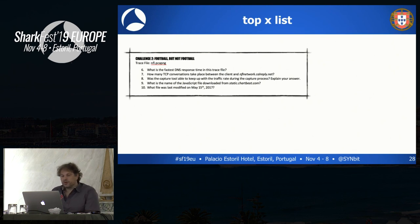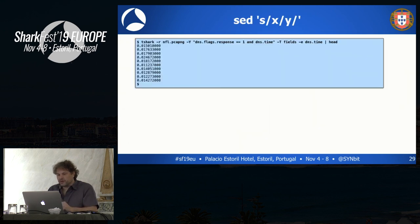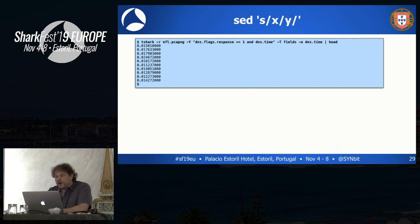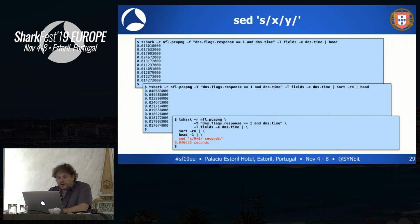The next question: what is the fastest DNS response time in this trace file? I need to do something with sorting and getting the head of a list. I read the trace file, look at DNS flags where response equals 1 (only DNS responses), and it must contain a DNS time field, which means we've also seen the request. I extract the DNS time and create output, then create a sorted list of the output. Since I'm only interested in the top one entry, I add head -1.